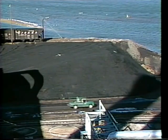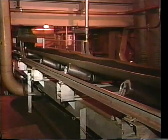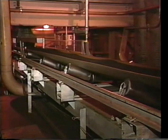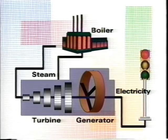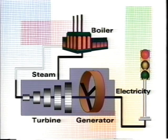Coal piled up outside the plant is carried by conveyor belt to the boiler. Peeking inside the boiler, we get a glimpse of the intense flame that boils water into steam. The steam is carried by pipe to the generator where it turns a turbine.